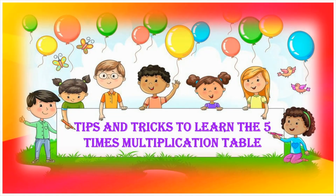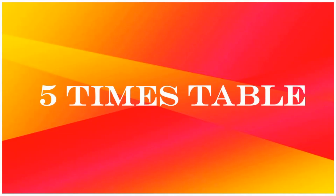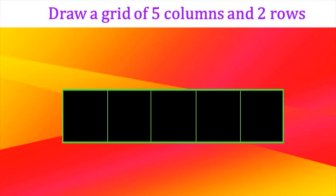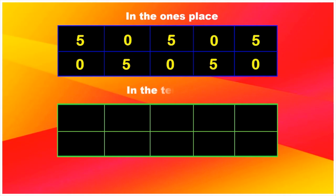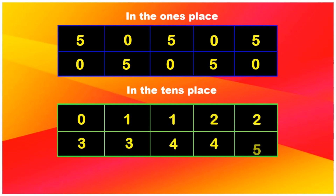I'm going to show you some tips and tricks to learn the five times multiplication table in a fun and easy way. First, draw a grid of five columns and two rows. Next, in the one's place, we just need to write the pattern of five and zero as shown in the grid. Now, in the tens place, we write a zero followed by numbers from one to four twice and finally the number five in the last box to complete the grid.